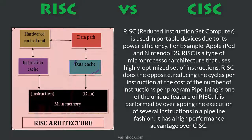RISC is used in portable devices due to its power efficiency — for example, Apple iPod and Nintendo DS. RISC is a type of microprocessor architecture that uses a highly optimized set of instructions. RISC does the opposite of CISC, reducing the cycles per instruction at the cost of the number of instructions per program. Pipelining is one of the unique features of RISC; it is performed by overlapping the execution of several instructions in a pipeline fashion, giving it a high performance advantage over CISC.